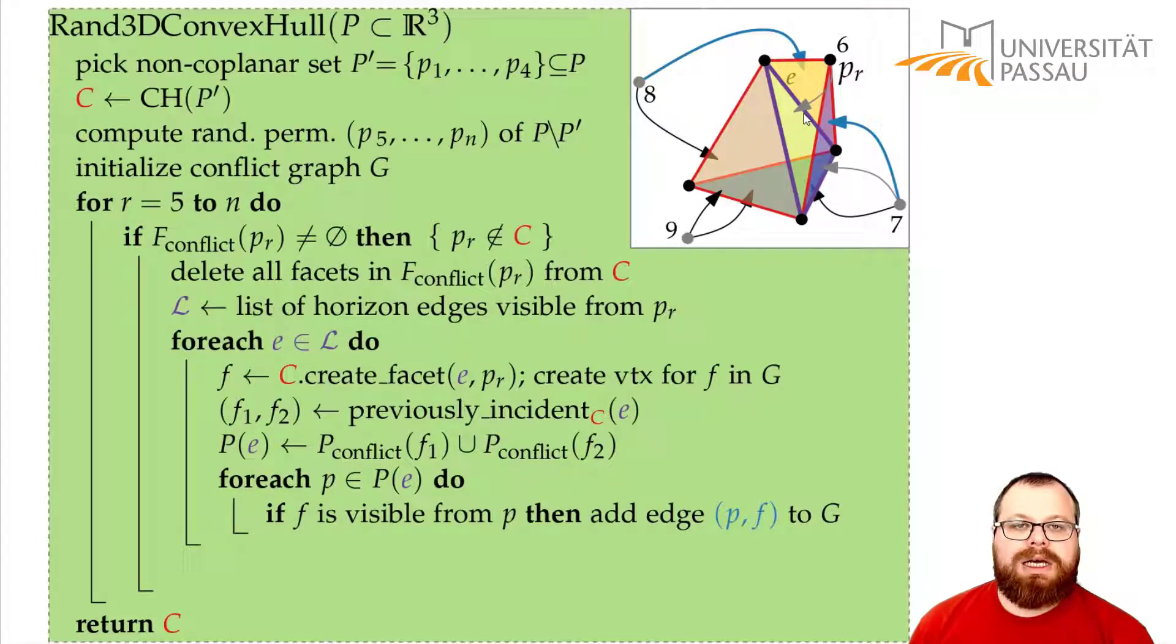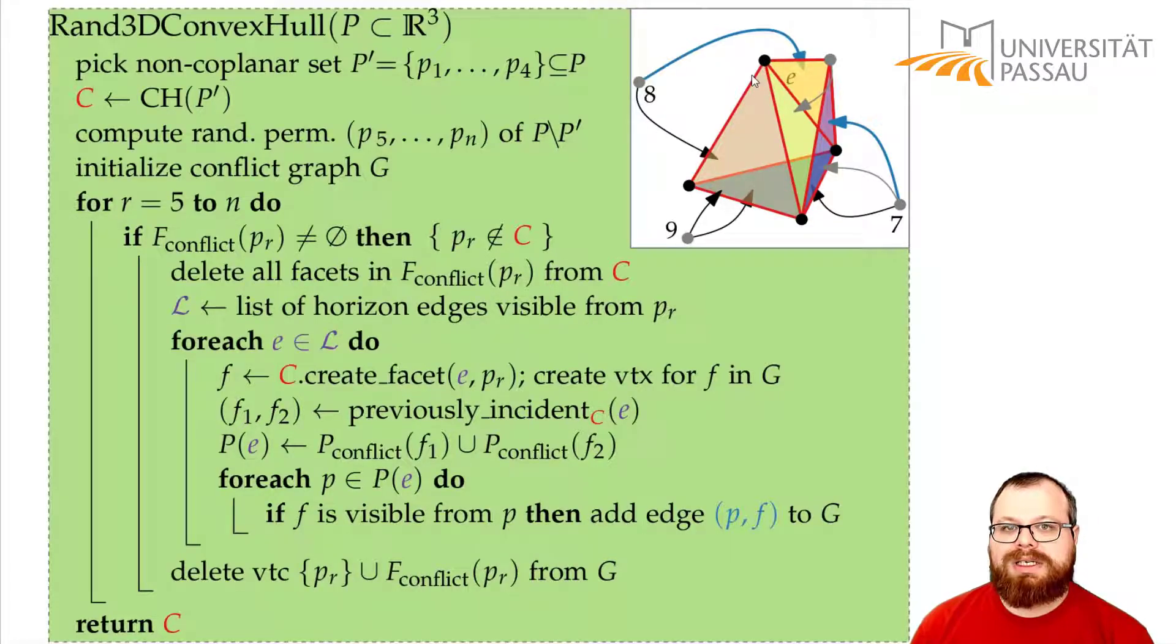And now we still have to remove this point from the conflict graph, because it's not unprocessed anymore. And we have to remove all the faces that we deleted. So we remove the vertex PR and the conflict faces of it, which in this case was only this face. So these two edges we also remove. And then we are done with one iteration. We continue with the next one and keep on constructing the convex hull incrementally with the aid of the conflict graph.